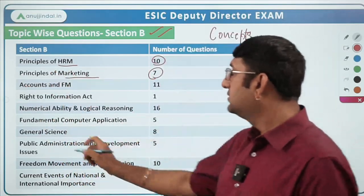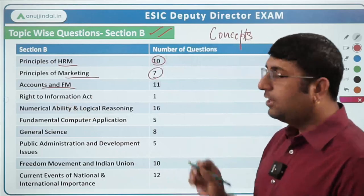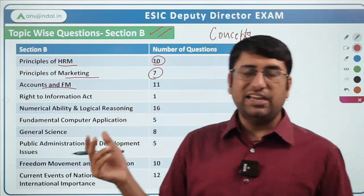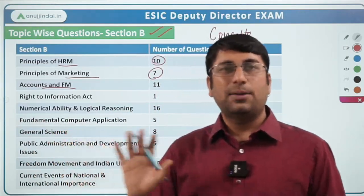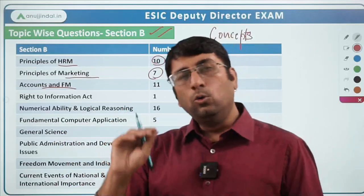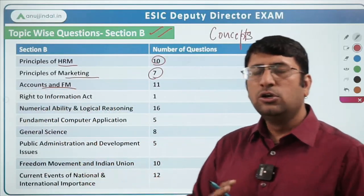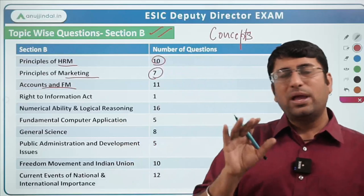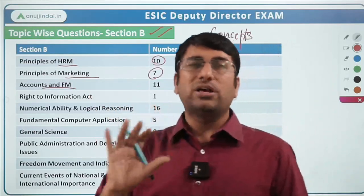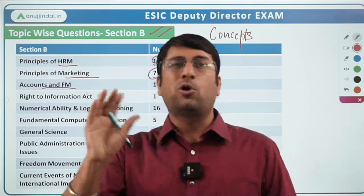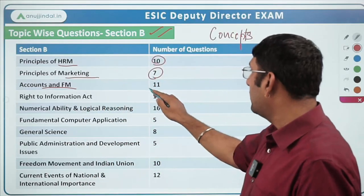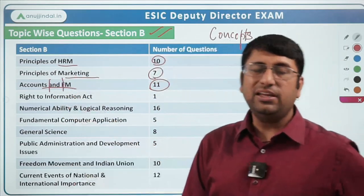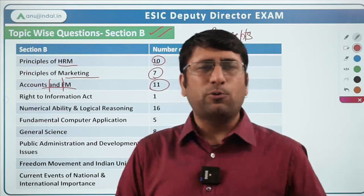Third is Accounts and Financial Management. Harneet Sir has been doing a fantastic job — he takes accounts and financial management sessions on Wednesdays at 1–2 p.m. If you attended those, your basic concepts should be clear and you can solve the questions comfortably because there were not many numerical questions. Many students worry about solving numericals, but even in accounts and FM, conceptual questions were asked — easy to moderate level. 11 questions were asked from accounts and FM combined.